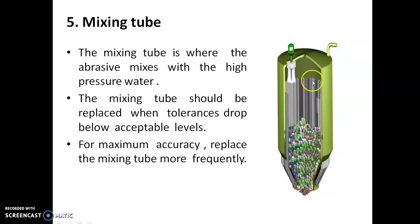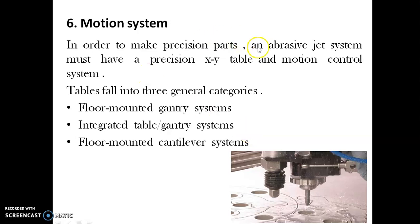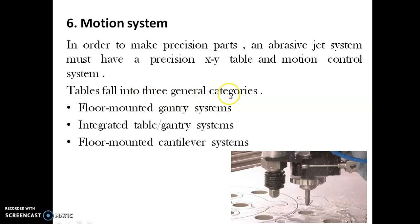We have a mixing tube where water and abrasives are mixed to become slurry. The motion system controls the XY table motion control so that the tool moves to certain coordinates of the table depending on the profile we need to cut. It is made up of three categories: floor-mounted gantry, an integrated table system, or floor-mounted cantilever systems.